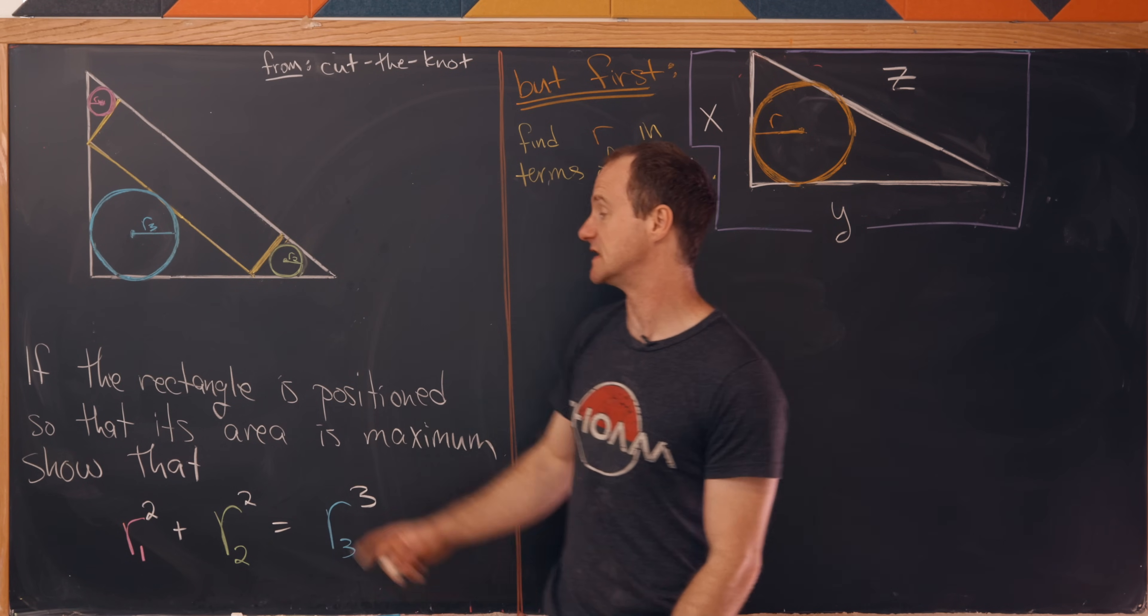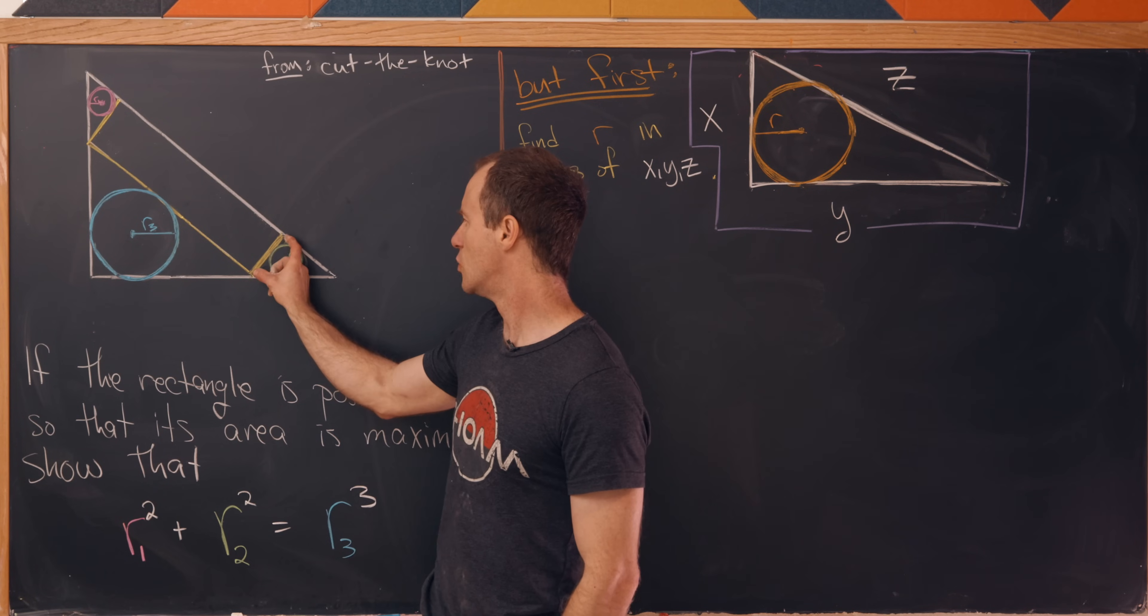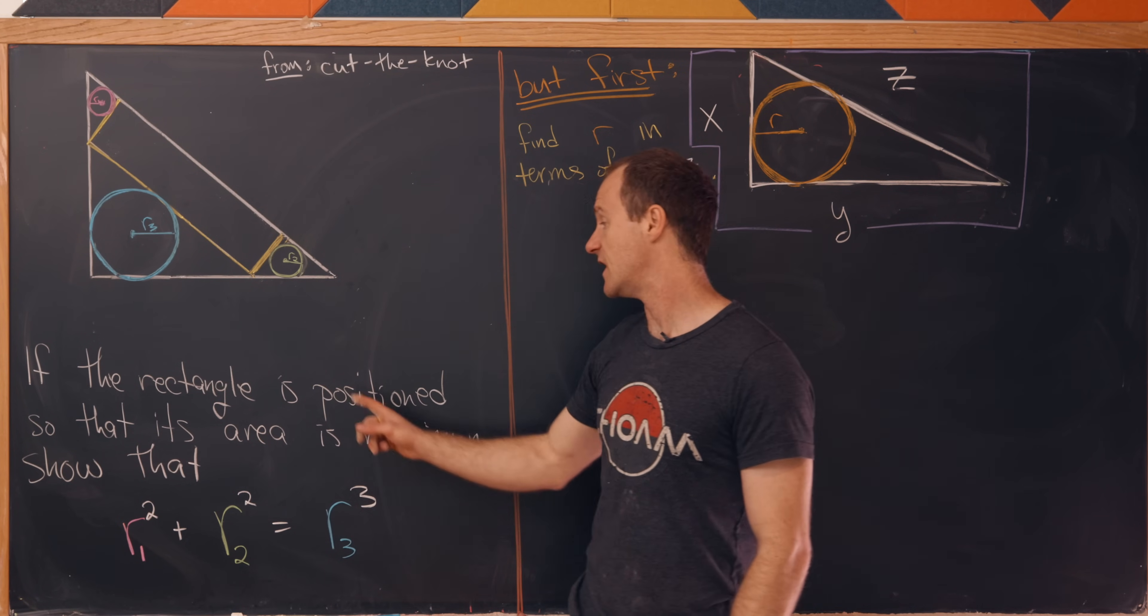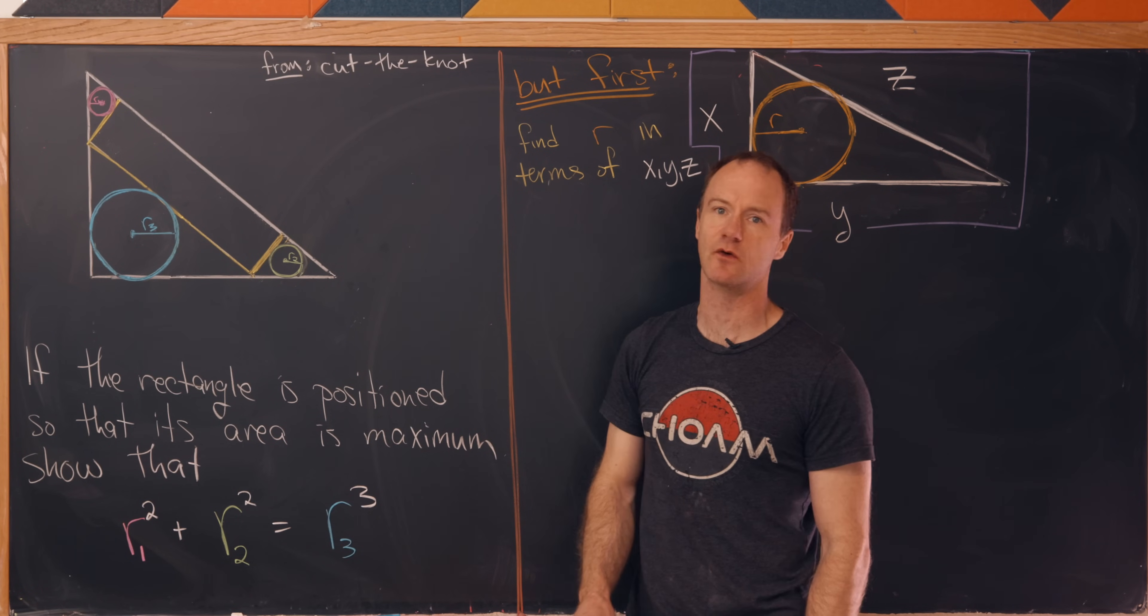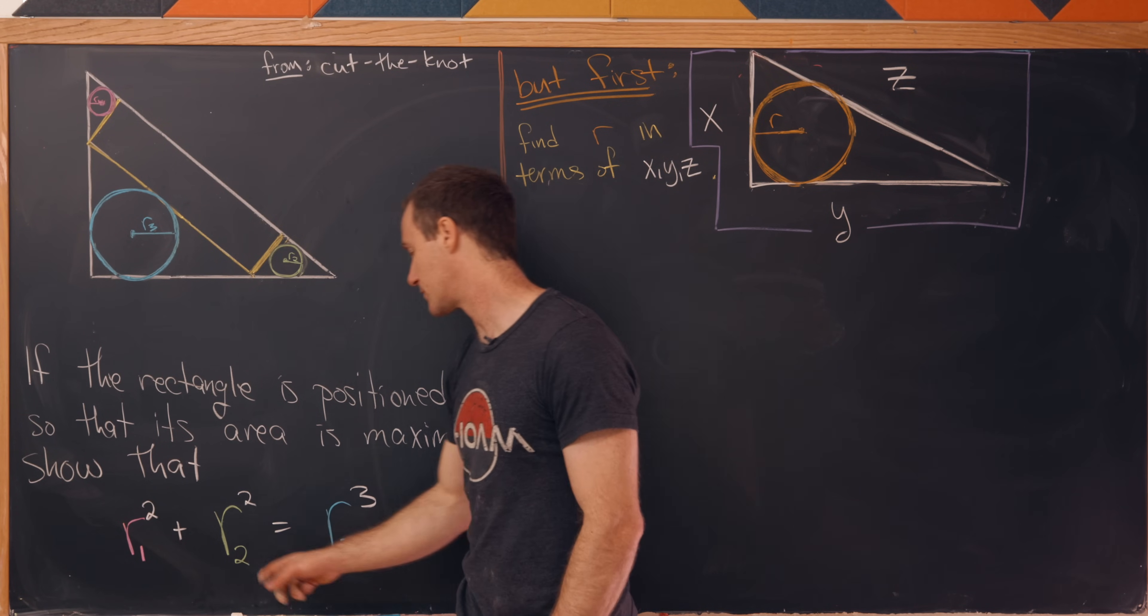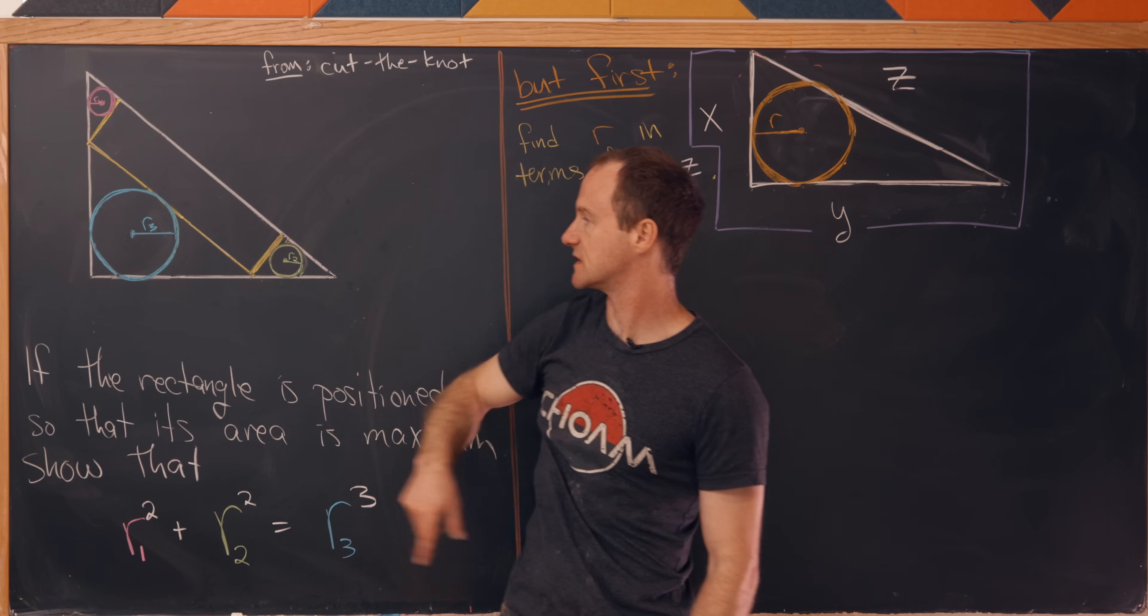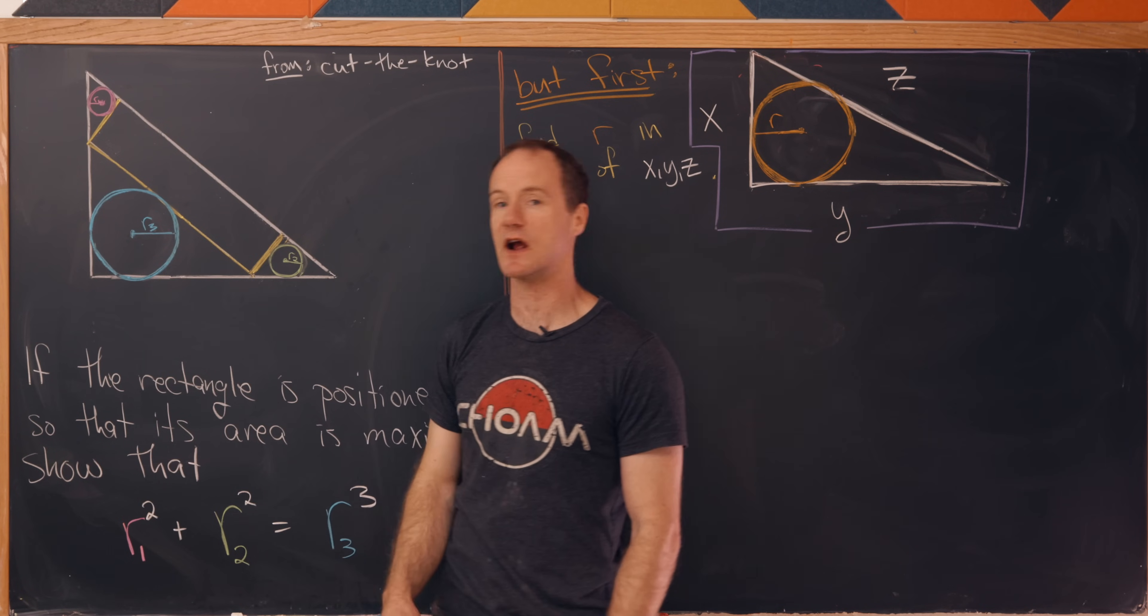Our goal is to show the following result: if this rectangle is positioned so that its area is maximum, then we have the following nice relationship between the radii of these circles: r1 squared plus r2 squared equals r3 squared, where r3 is the radius of the one next to the right angle.